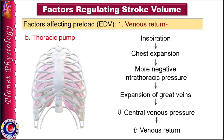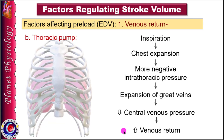During inspiration, the chest expands and intrathoracic pressure becomes more negative. This leads to expansion of great veins in the thorax and decreases central venous pressure. It acts like a suction force and facilitates venous return — this is the thoracic pump.